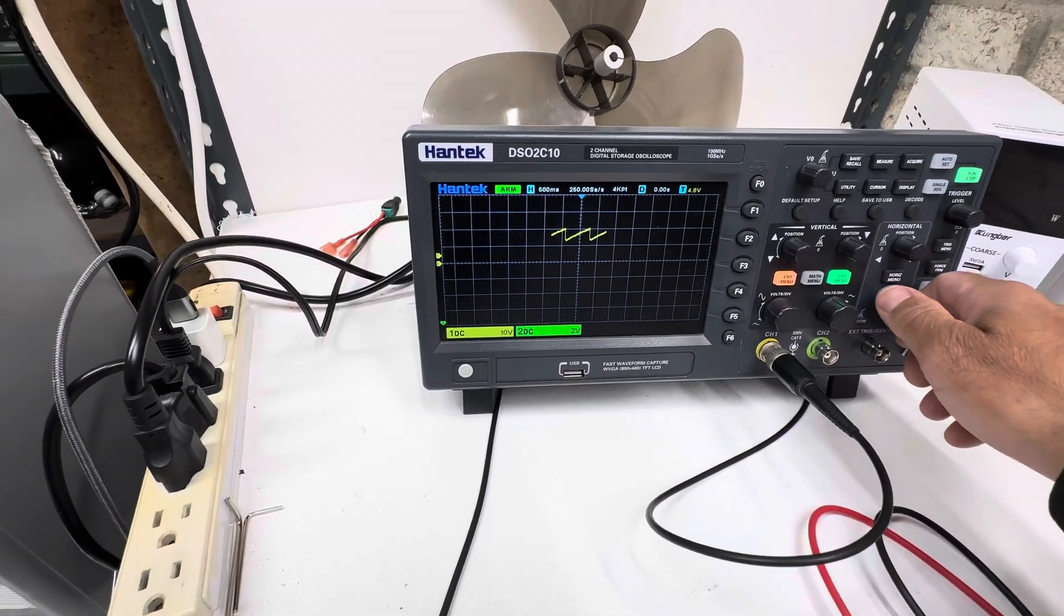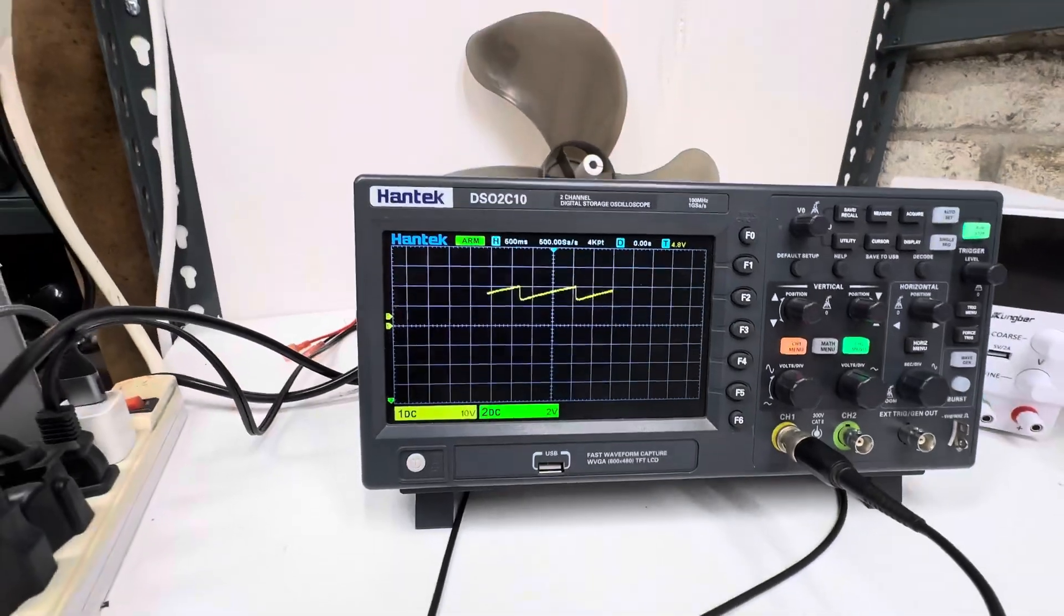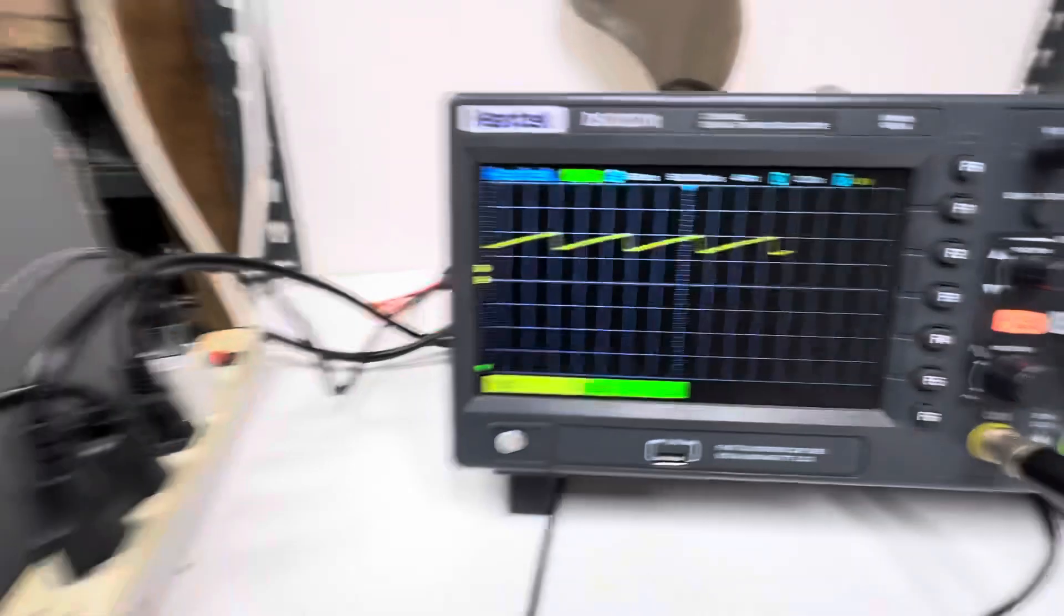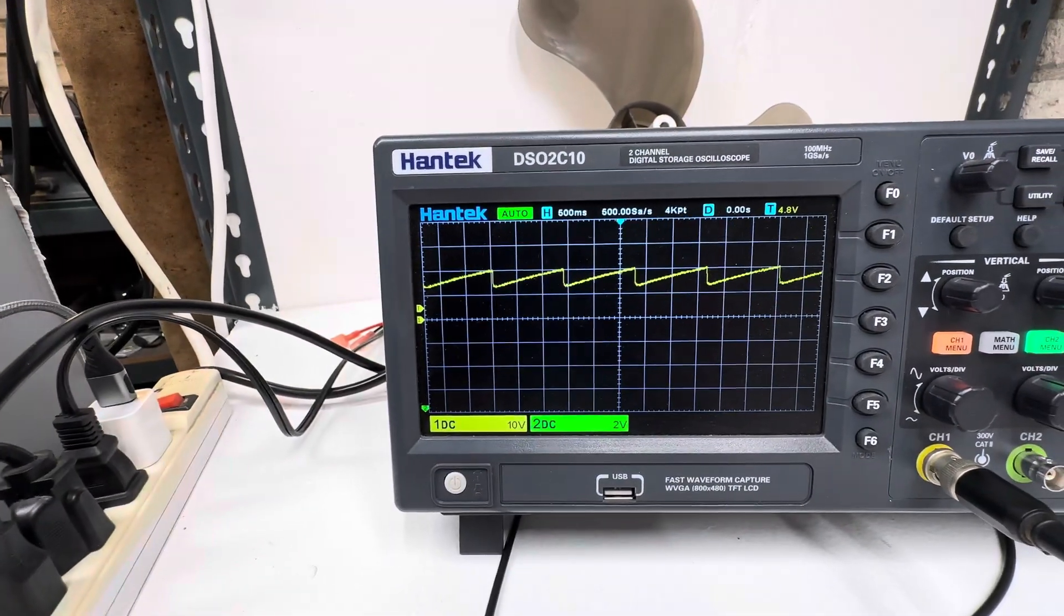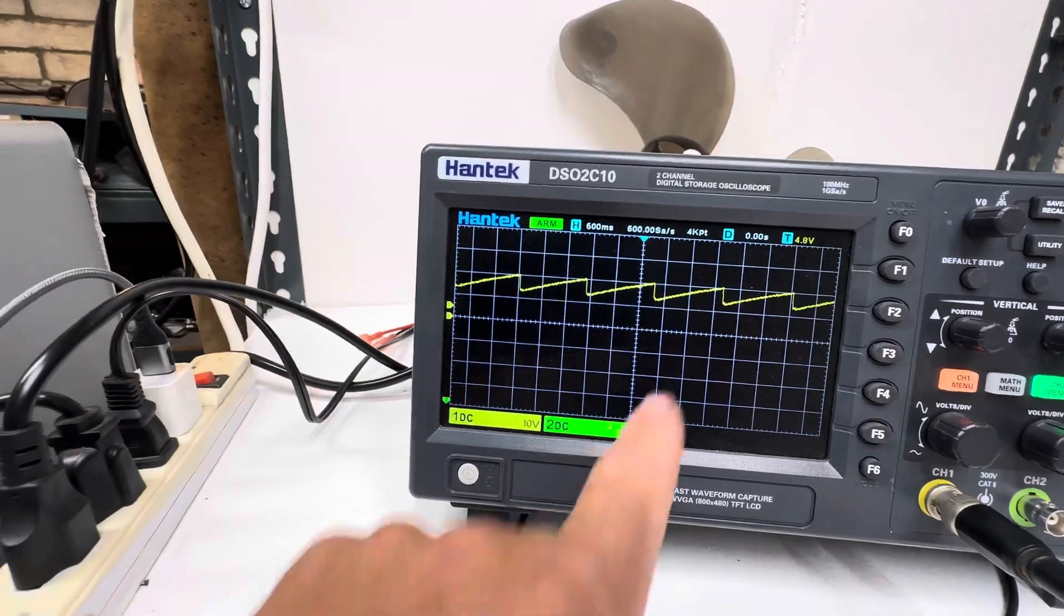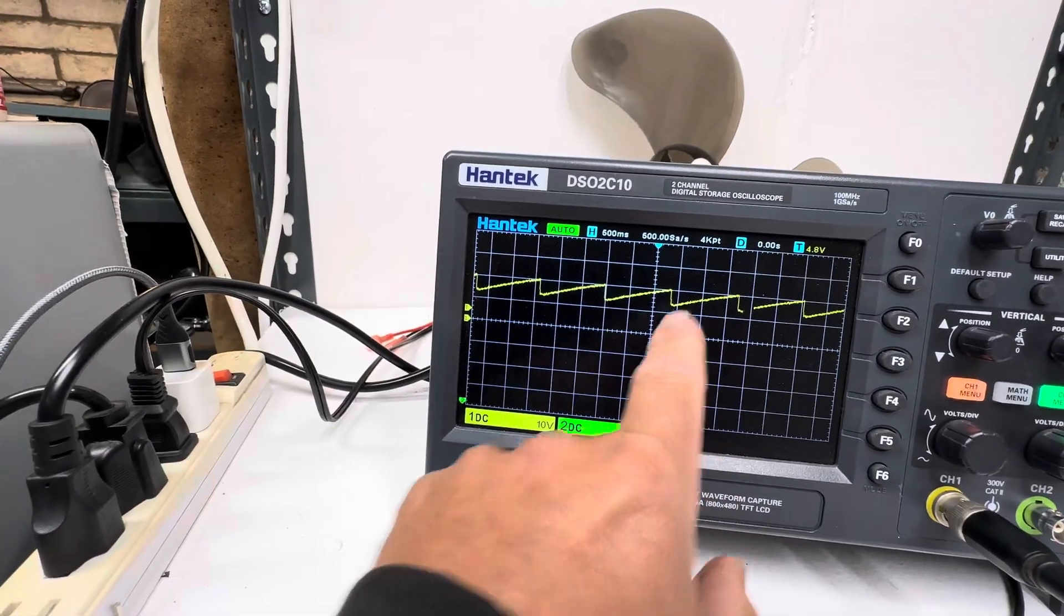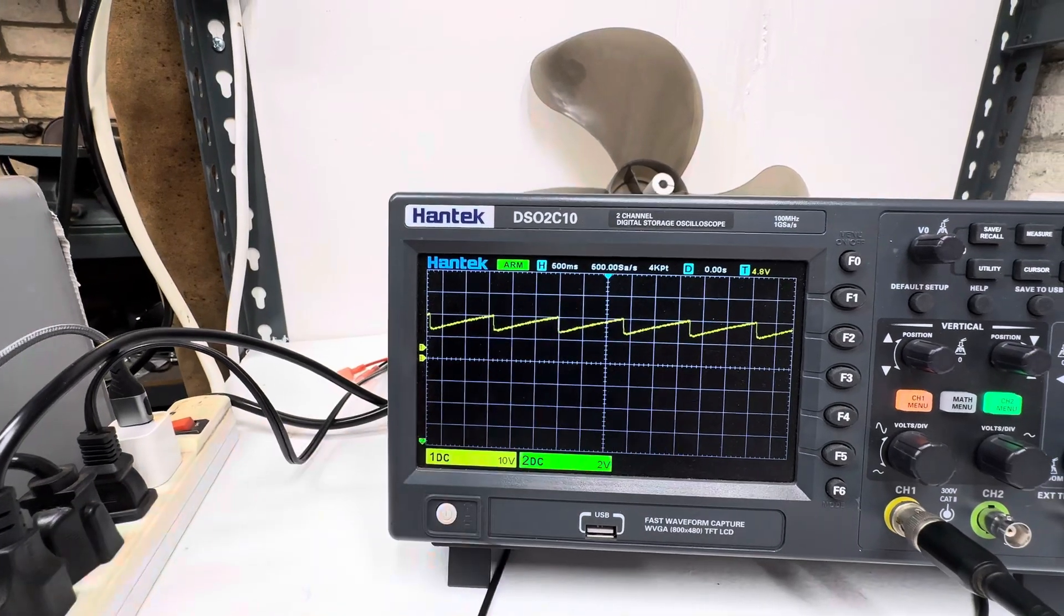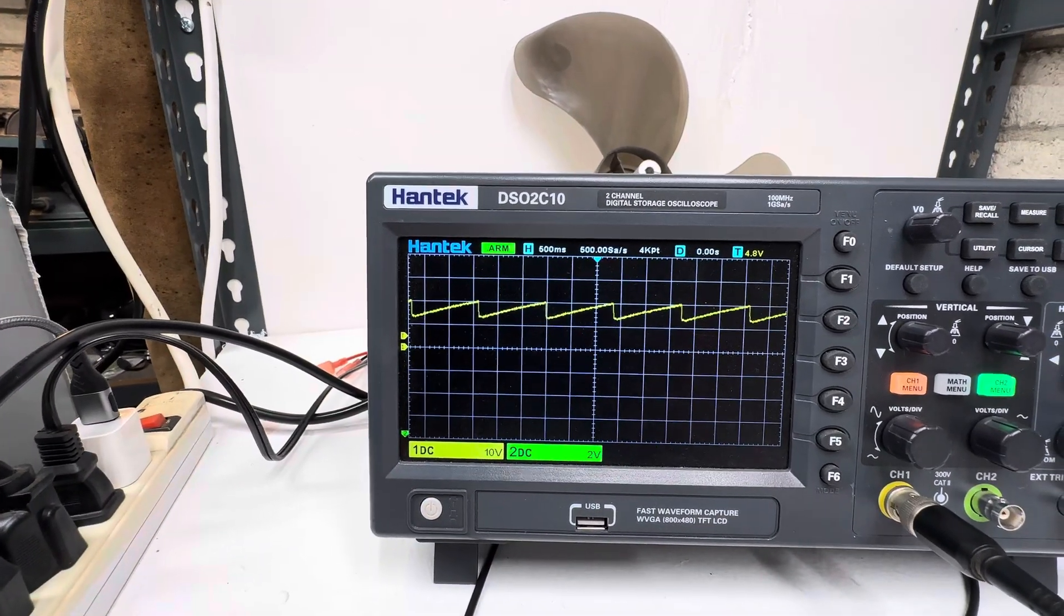This is how the cap dump is going. It has a really sharp turnoff period. These are 10 volts per square, so it's turning off right around 14 volts and kicking off at 20 volts right around there.